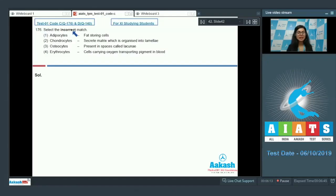Question 176: select the incorrect match. Adipocytes are fat storing cells - that is correct, they are specialized to store fat. Option two: chondrocytes secrete matrix which is organized into lamellae - no, it's incorrect. Lamellae are characteristically found in bone osteocytes.